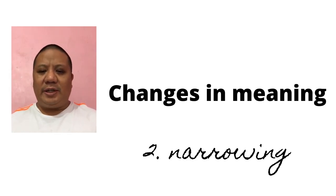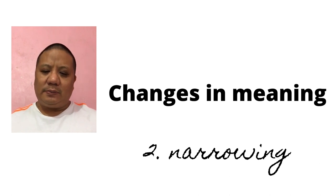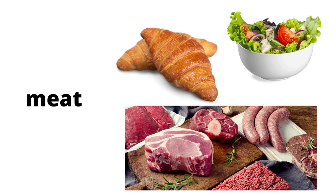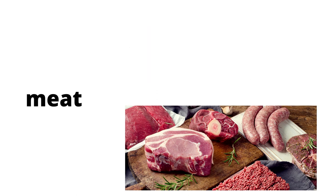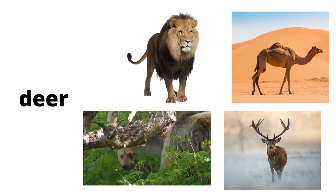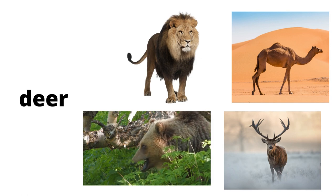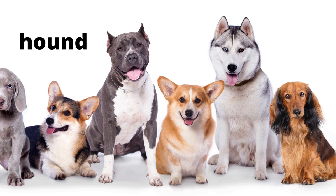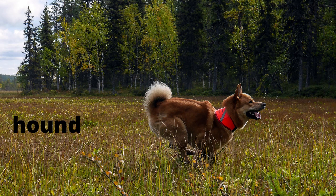Now if there's broadening, there's also narrowing. For example, the word meat used to refer to all kinds of food, but now it only refers to animal flesh eaten as food. Interestingly, the word deer used to refer to all kinds of beasts — now it refers only to those with horns, long legs, and are herbivores. The word hound used to refer to all kinds of dogs — now it refers only to dogs used for hunting.